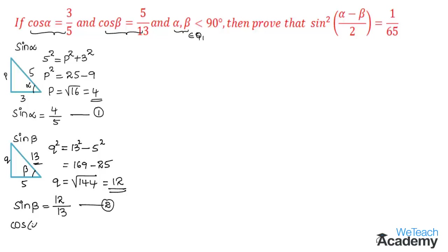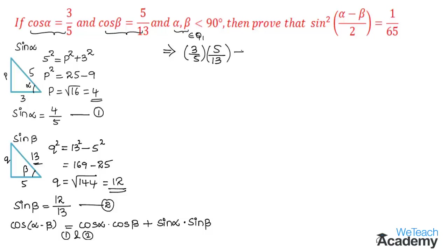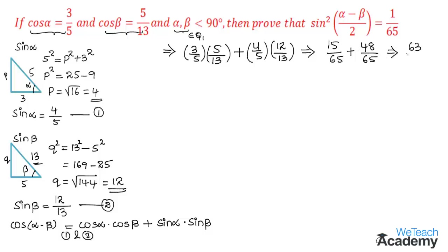Now let us find cos(α − β) using the formula: cos(α − β) = cos α · cos β + sin α · sin β. Substituting values from equations 1 and 2: (3/5)(5/13) + (4/5)(12/13) = 15/65 + 48/65. Since the denominators are common, we add the numerators: (15 + 48)/65 = 63/65. So cos(α − β) = 63/65. Let us name this equation 3.